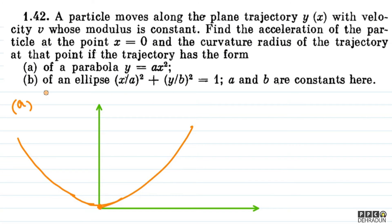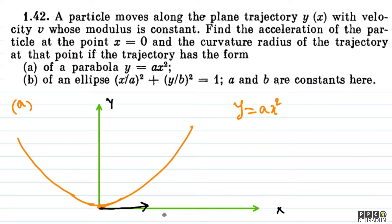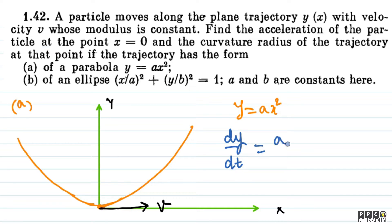The first case is a parabola y equal to ax squared. So, y equal to ax squared is given to us. Differentiating with respect to time, dy upon dt equals 2ax times dx upon dt.